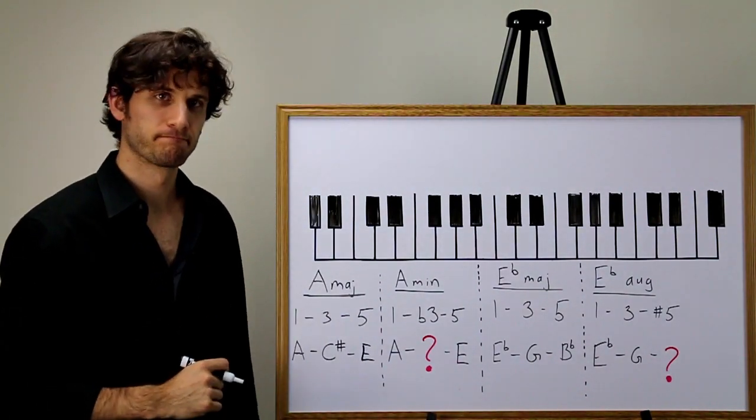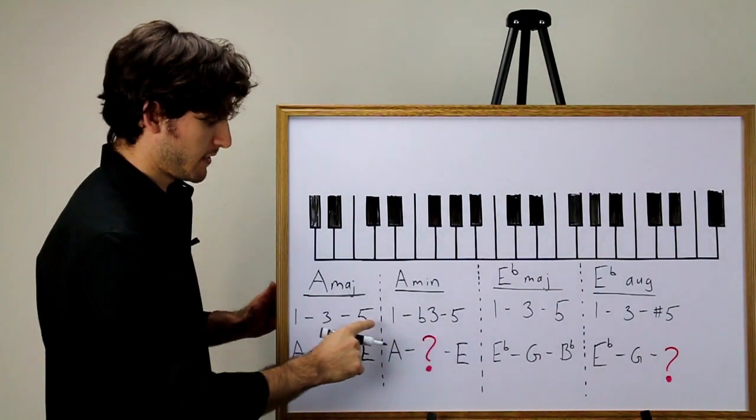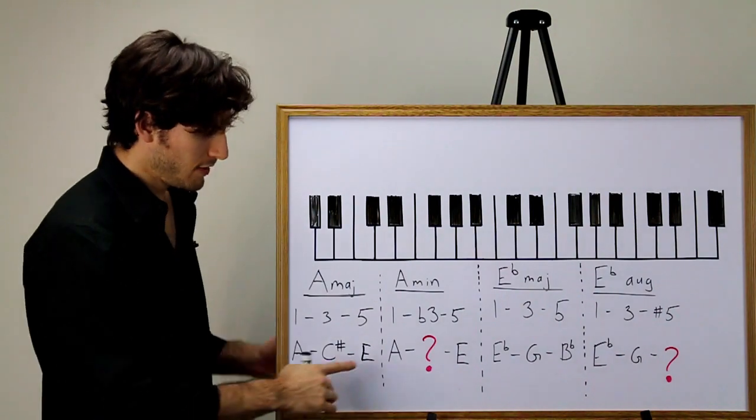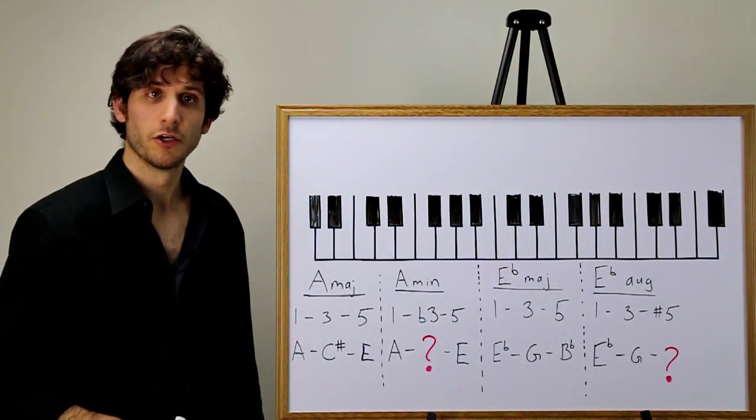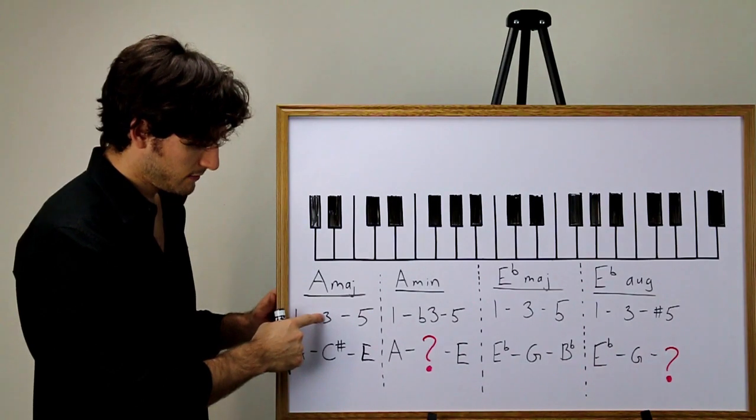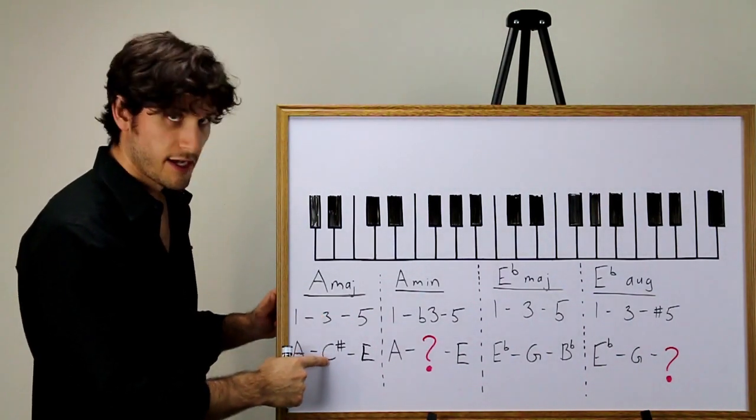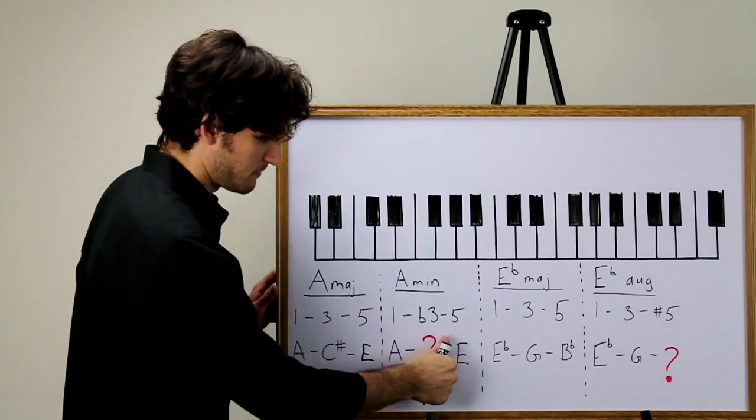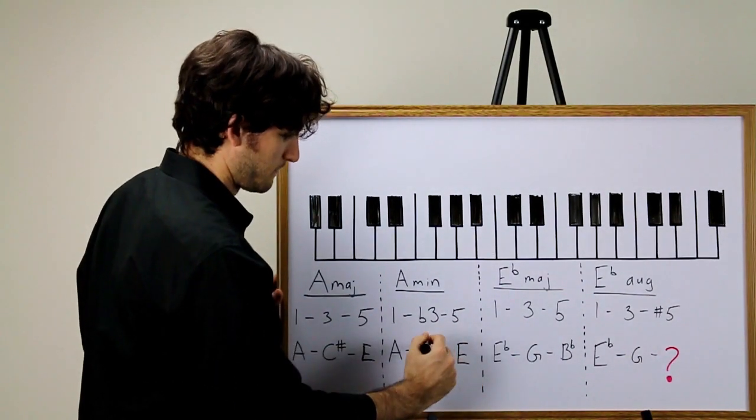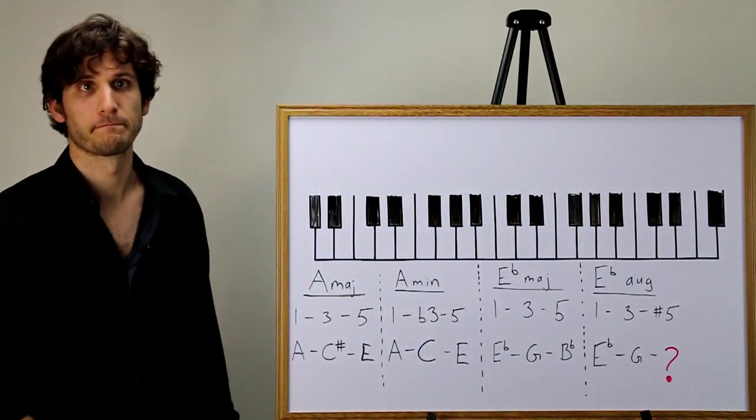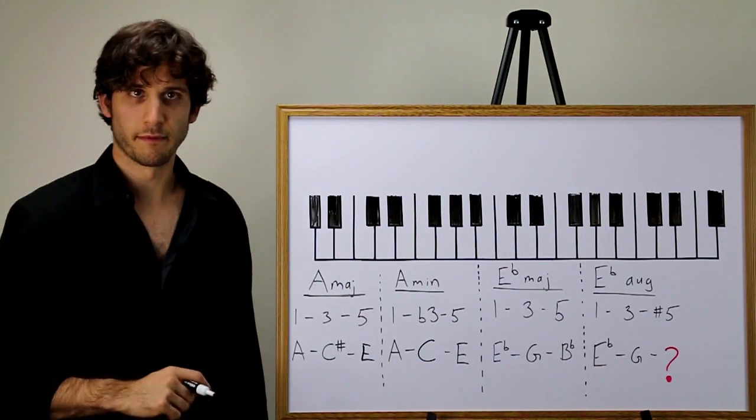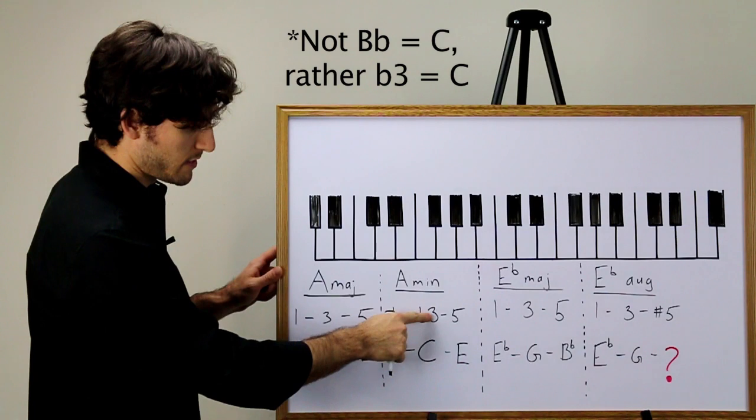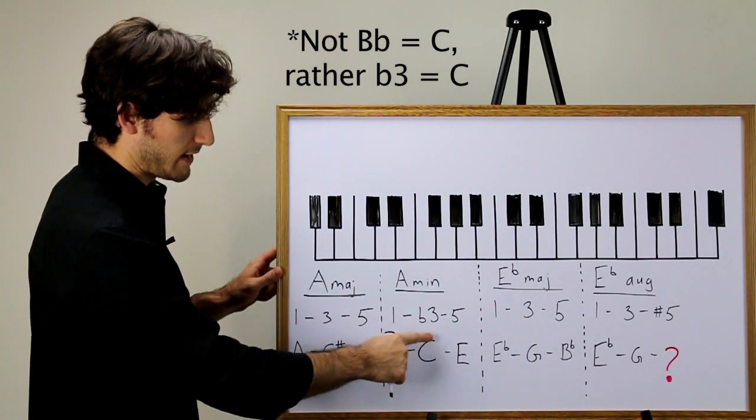What about A minor? The A and the E are going to be the same because the one and five are the same between major and minor chords. But what about this flat three? We started with three being C sharp, and so the flat three must be simply a half step below this. It must be C.